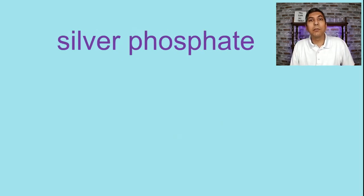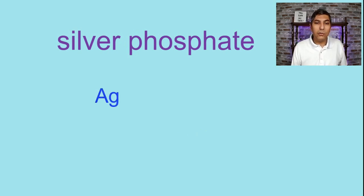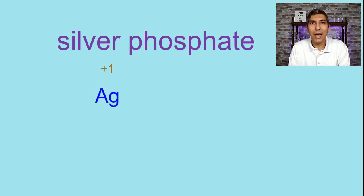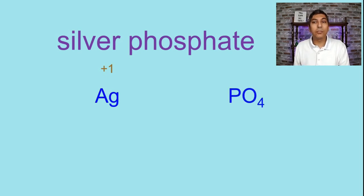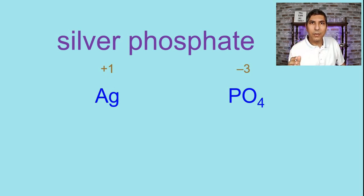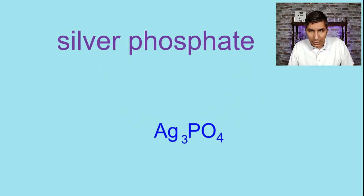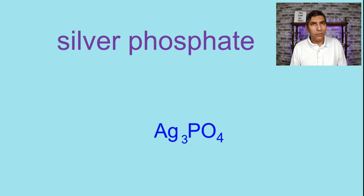Let's try silver phosphate. Silver has the symbol Ag, and from the ion chart, silver has a charge of positive 1. Phosphate is a polyatomic ion — the last ion on the ion chart — with a formula of PO₄ and a charge of negative 3. The charges don't cancel, so we swap them. The formula is Ag₃PO₄. No parentheses are needed because we're not placing any additional subscript onto that polyatomic ion.